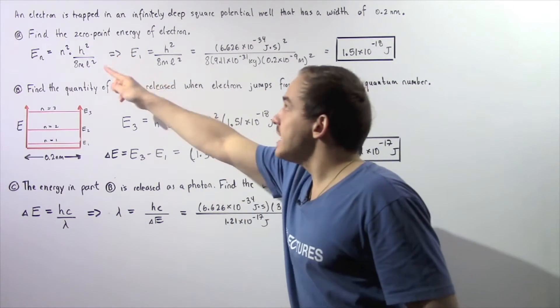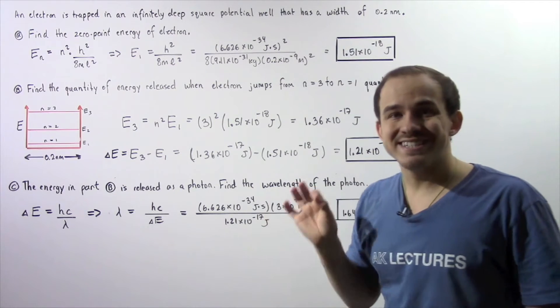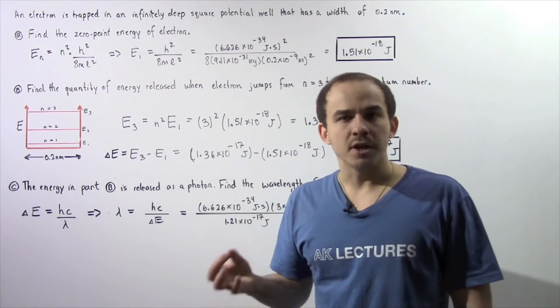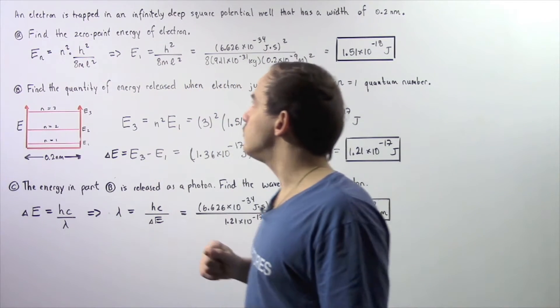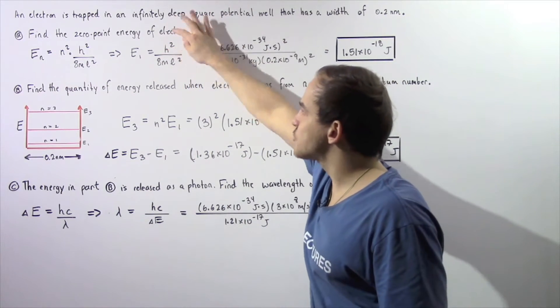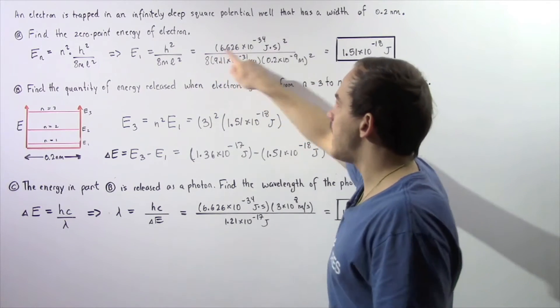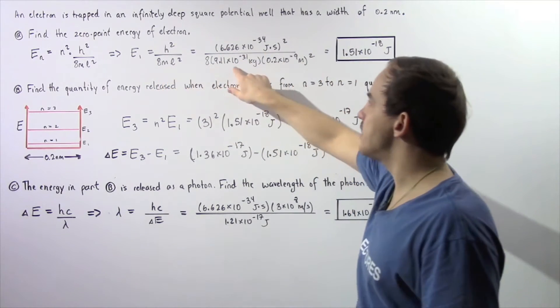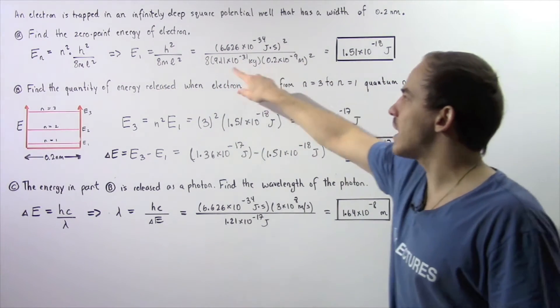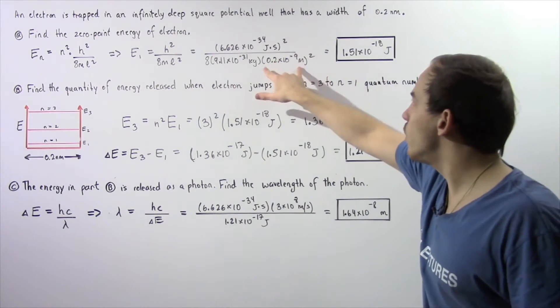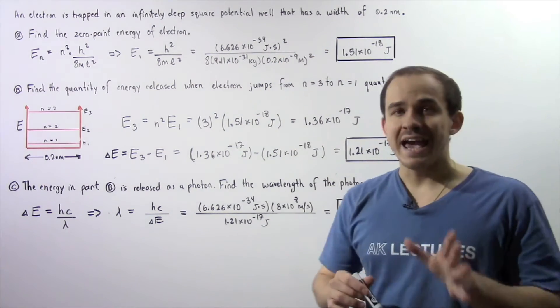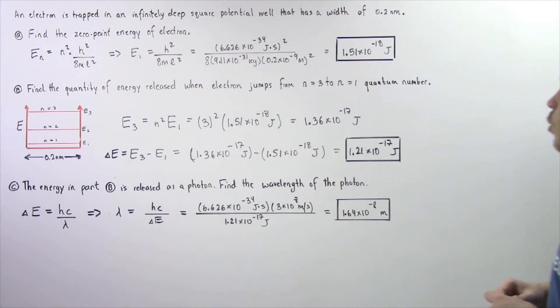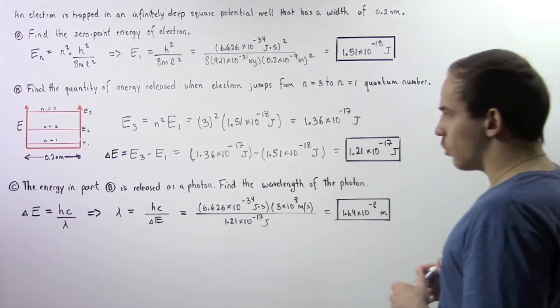The zero-point energy represents a quantum number of n equals 1. So if we plug in n equals 1, we get h squared, so Planck's constant squared divided by 8 multiplied by the mass of the electron in kilograms multiplied by the width squared given in meters. And that gives us an energy value of about 1.51 times 10 to negative 18 joules.